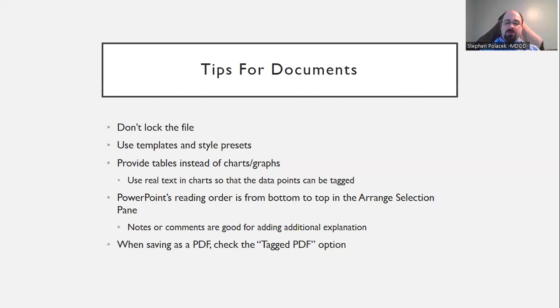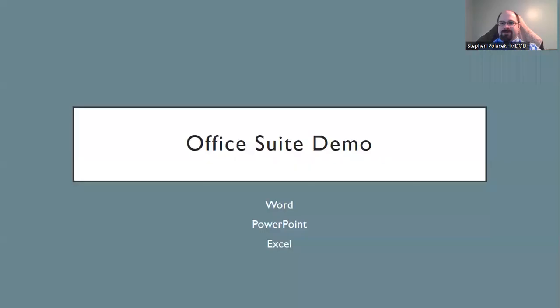When you save the document as a PDF, make sure you've checked the tagged PDF option, because that is how you ensure all of the work you've done in Word or Excel isn't wasted when you send it to PDF. We'll show how to do that right now. We're going to start with Word and then look at PowerPoint and Excel briefly, as most of the accessibility checker functionality is the same in both.